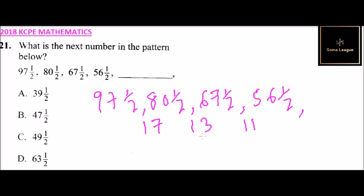If you observe these differences, the next number should be 7. So if you take 56 and a half and subtract 7, you get 49 and a half.